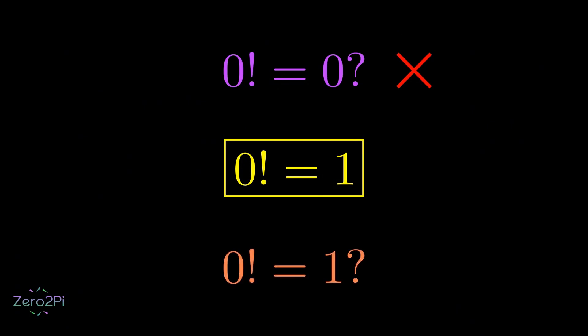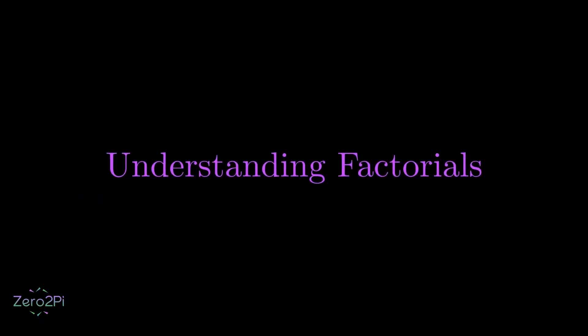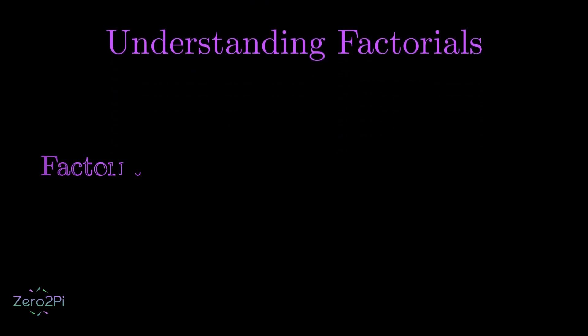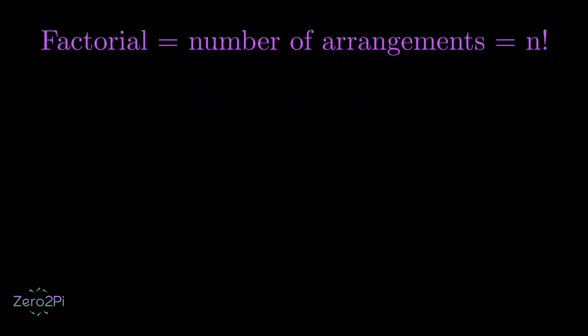So why is the factorial of 0 equal to 1? Let's break it down by first looking at a logical example. We know that a factorial is defined by the number of ways we can arrange a set of items. To further understand this concept, we will look at the different ways to arrange a number of letters.